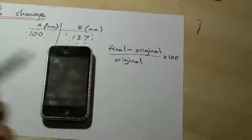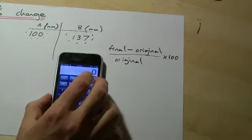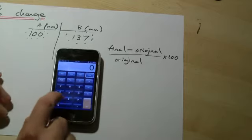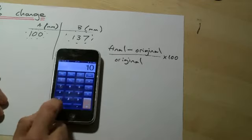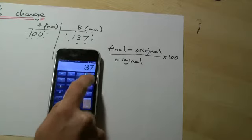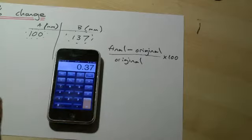So let's see what we get. Well the final was 137, minus the original which was 100, 37. And we divide that by the original score again, 100, equals 0.37.